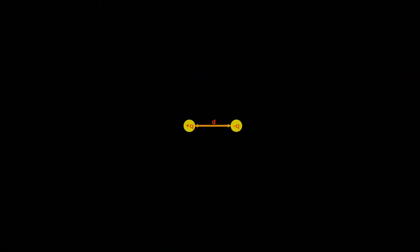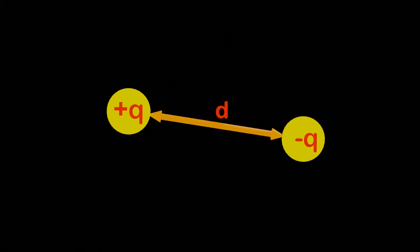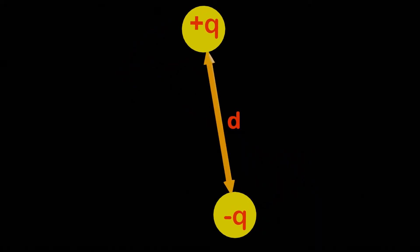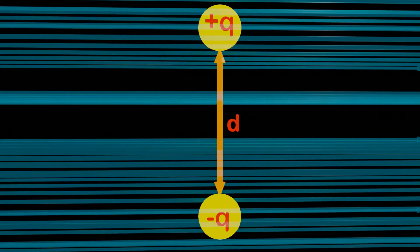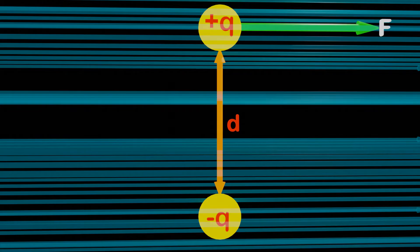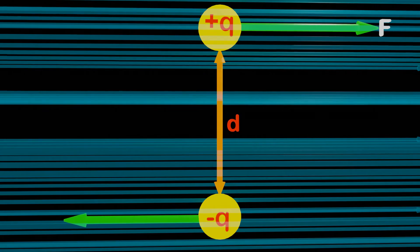Let's take a step forward and understand the electric dipole in an even better way. What happens if an electric dipole is placed in a uniform electric field? As soon as the electric dipole is placed in the electric field, a force starts acting along the electric field on the positive end of the dipole, and in the opposite direction of the electric field on the negative end.